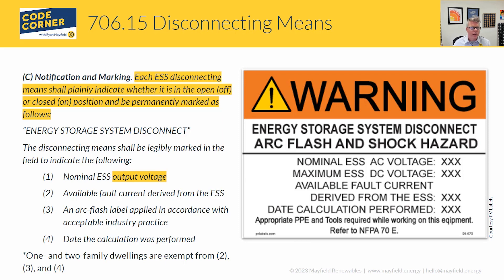At the end of the notification and marking section, there is also a requirement — familiar to those who work with PV systems — that if the terminals are energized in the off position, you need a label indicating that both the line and load sides of that disconnect are energized. If that applies to your system, you'd include a label similar to what we've done for the DC side of inverter systems for a long time.